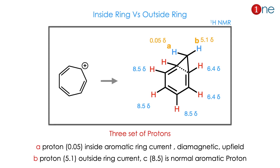Let us learn that by example, looking at the ring current effect on NMR values. Here a homoaromatic compound is shown — one carbon is out of the plane to create homoaromaticity. The hydrogen inside the ring current is diamagnetic; outside is paramagnetic. Proton A is 0.05 ppm because it is diamagnetic and upfield, giving a low chemical shift. The other normal proton is 6.4 ppm, and the one outside the ring current has 5.1 delta. So the proton inside the ring current will have a low chemical shift.